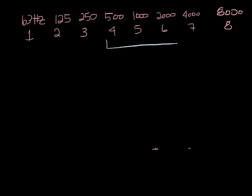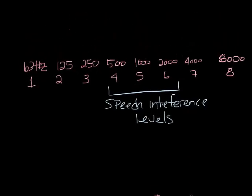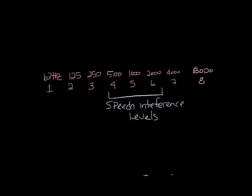Octave bands 4 through 6 are the speech interference bands, or also called the speech interference levels. This is because most human speech happens between 500 and 2,000 hertz. Having a sound too loud in these bands could make it hard for people to hear other people talk, hence the name speech interference.